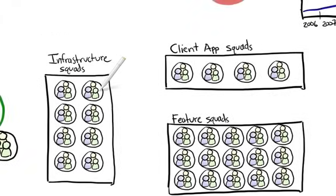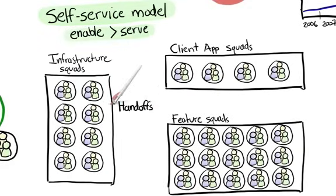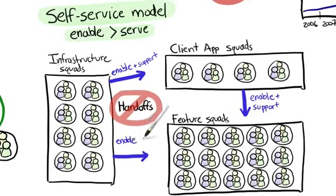Regardless of the current structure, we always strive for a self-service model. Kind of like a buffet. The restaurant staff don't serve you directly. They enable you to serve yourself. So we avoid handoffs like the plague. For example, an operation squad or client app squad does not put code into production for people. Instead, their job is to make it easy for feature squads to put their own code into production.